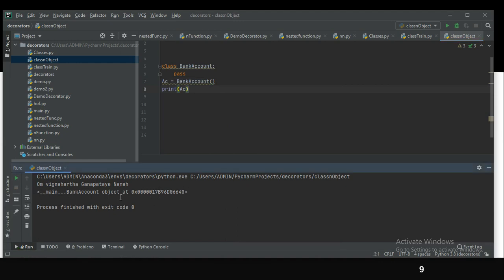We can see that the object got created. It tells us the object ac belongs to class bank account, which is created in main, and it is saved in this memory location. In the subsequent video, we will delve deeper into classes and objects.